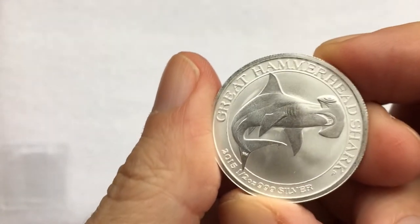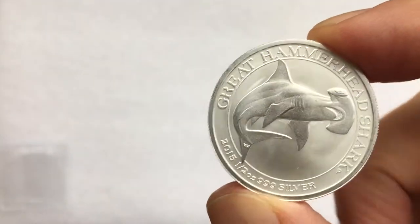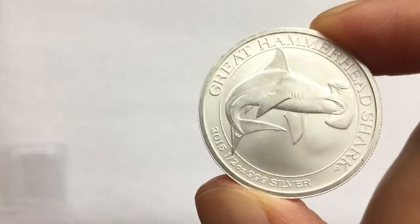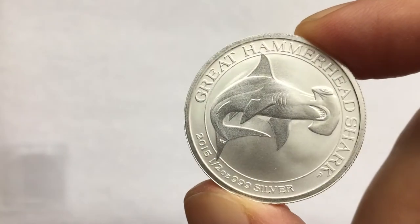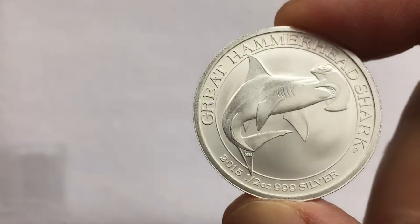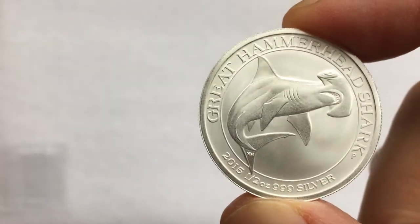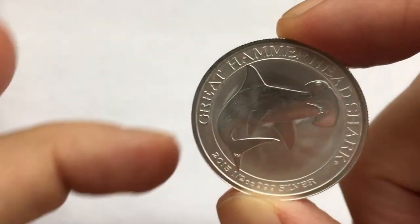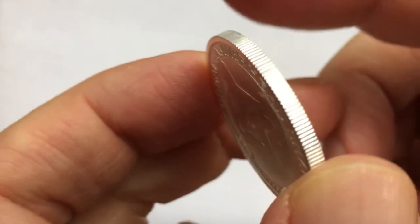Okay, it would seem that we have a 2015 half ounce, three nines fine silver Great Hammerhead Shark. And what a rather lovely coin that is! This is actually the first half ounce coin I have to add to my stack, so very welcome. Thank you to everybody involved.